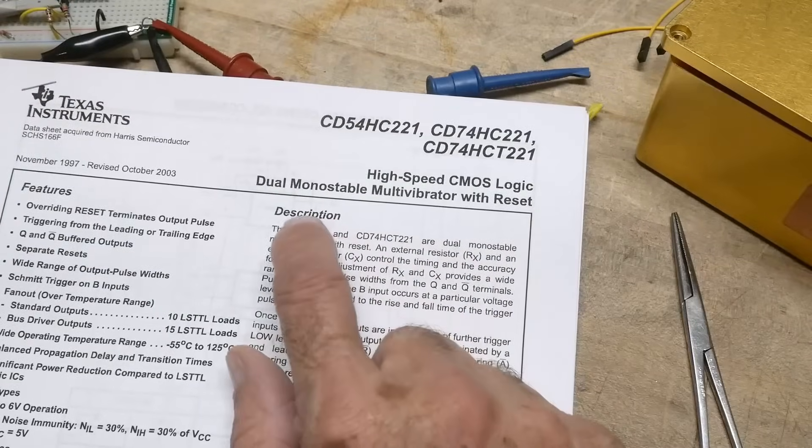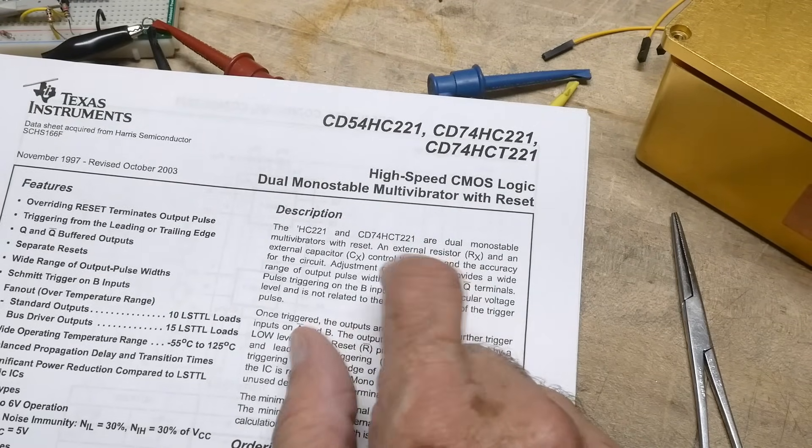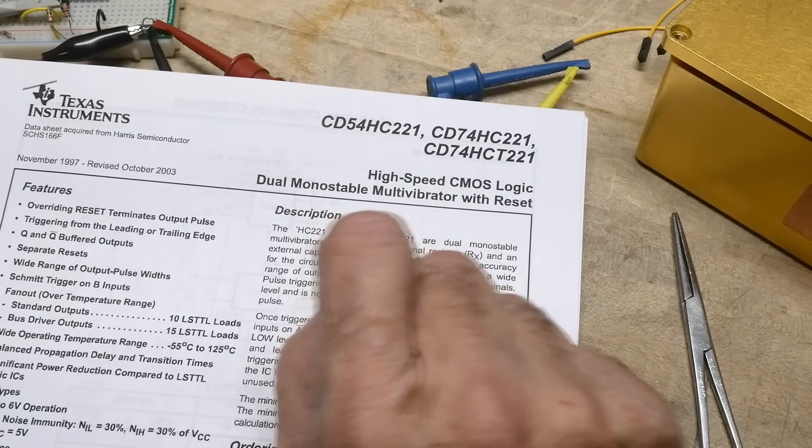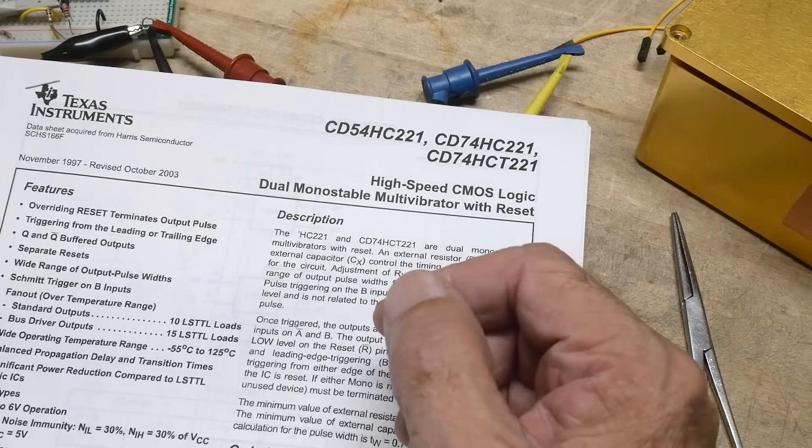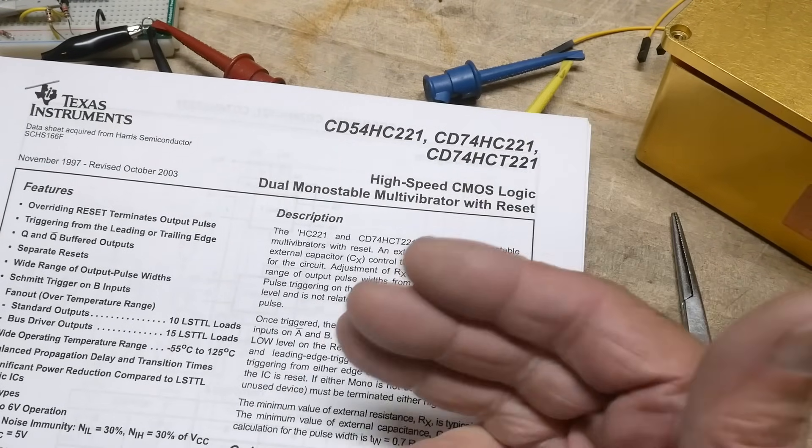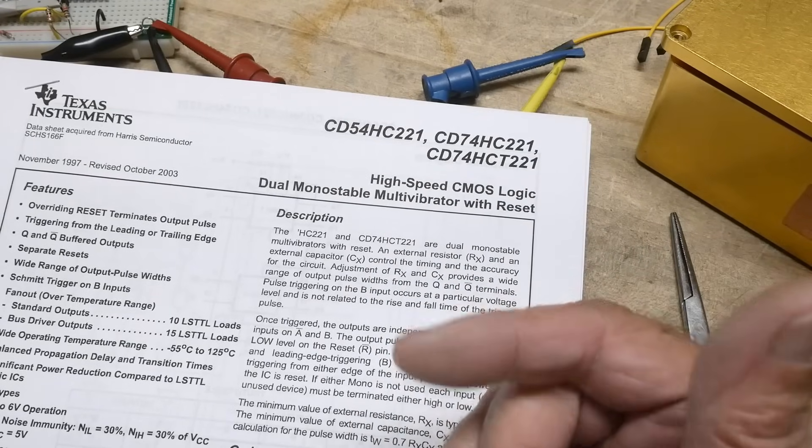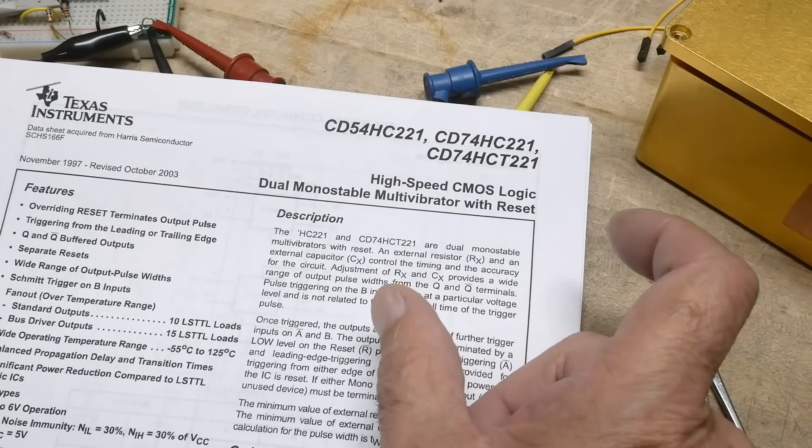So it is a dual multivibrator, or monostable multivibrator. So what is a multivibrator? It sounds really weird. So it waits for an edge, and if it sees an edge, it generates a pulse.